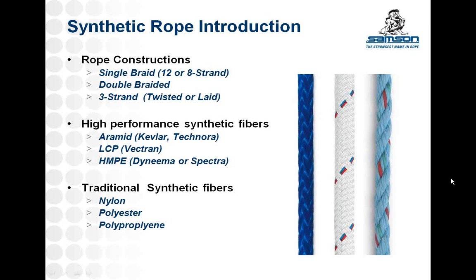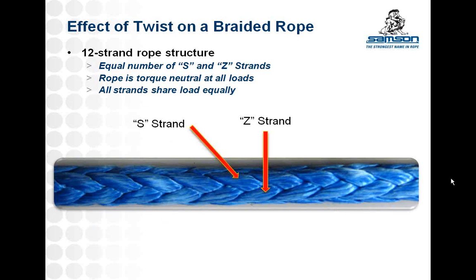There are various high performance synthetic fibers that can be used to make rope. These fibers have high strength with very low elongation and are significantly different from common synthetic fibers such as nylon and polyester. The three most common types are Aramids, LCPs, and HMPEs, which stand for high modulus polyethylene. Trade names for HMPEs are Spectra and Dyneema. HMPE is by far the most frequently used fiber in high performance ropes. Although it's extremely versatile, excessive twist can have a significant negative impact on the rope's strength.